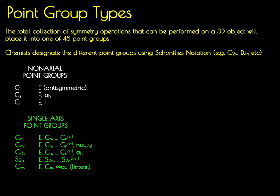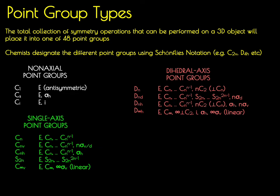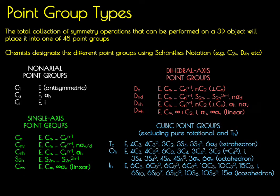Next highest in symmetry are the dihedral axis point groups, given the notation D with subscript n, where n specifies the highest order rotational axis. All of these point groups have perpendicular dihedral axes in addition to a high-order rotational axis. Highest in symmetry are the cubic point groups, which have multiple rotational axes. Of most importance to chemists are the TD, OH, and IH point groups, though the pure rotational T, O, I, and TH point groups are sometimes seen.